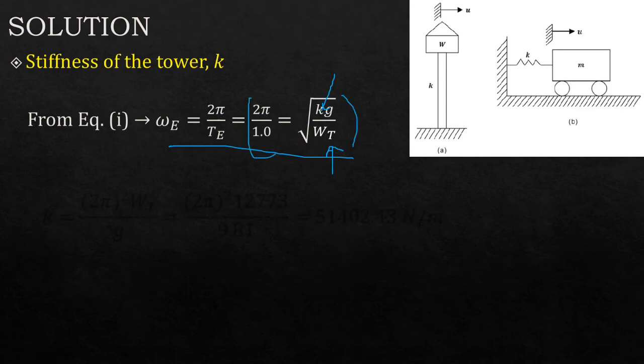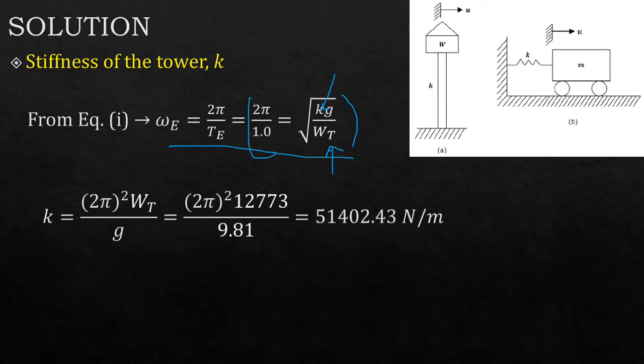This means from this equation we can be able to obtain the stiffness k. You just make it the subject of the formula from this equation, and you are able to obtain the expression. Then you just substitute the values of weight of the tank which you created in the previous slide, and of course you get the stiffness of the system. And that's all. It was just a simple and straightforward question. Thank you for tuning in. Subscribe for more and activate the notification bell so that you'll be notified next when I upload another learning episode. Thank you.